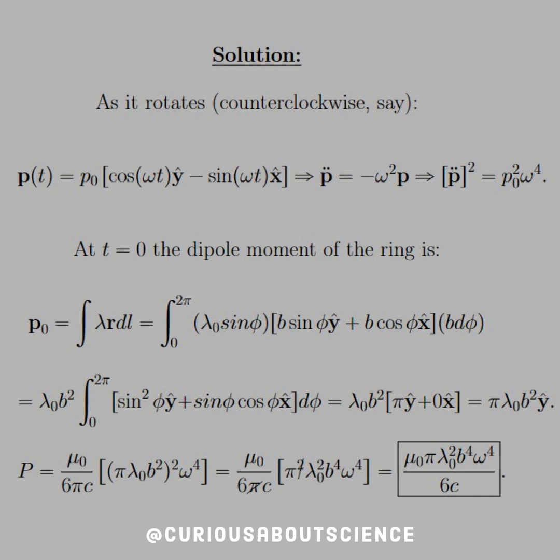At t = 0, the dipole moment of the ring is, well, here we have to be very careful because we have p₀ equal to the integral of λr dl, since λ is the charge (that's our q) and the separation distance is the radius (that's our d).